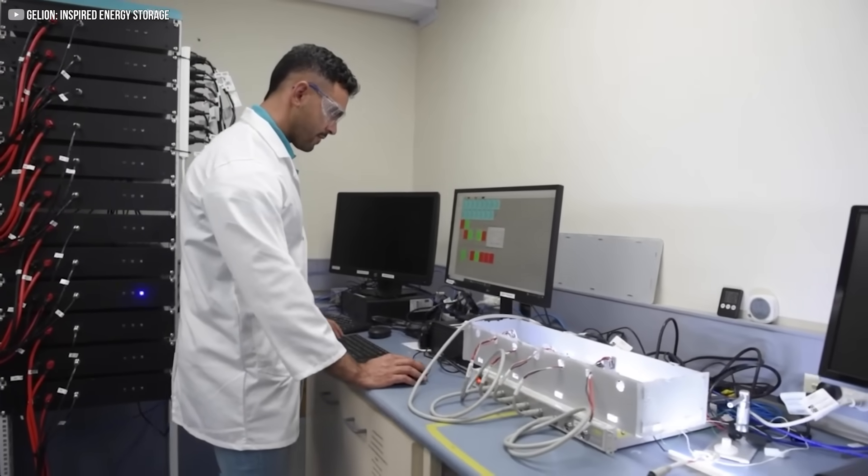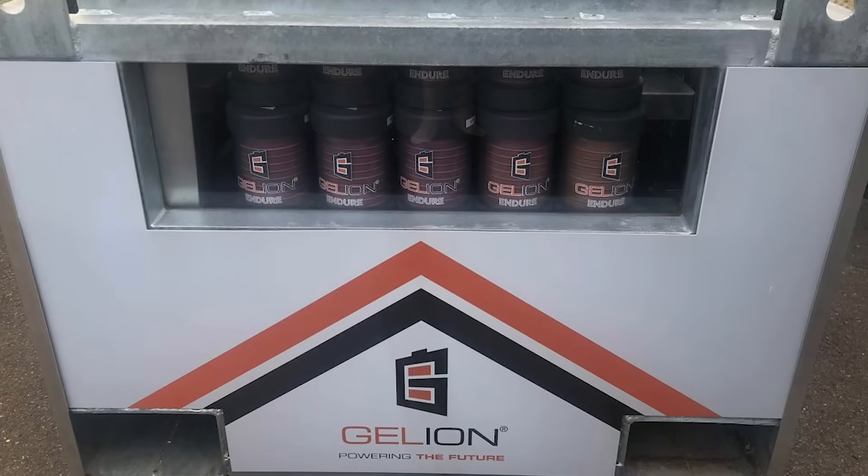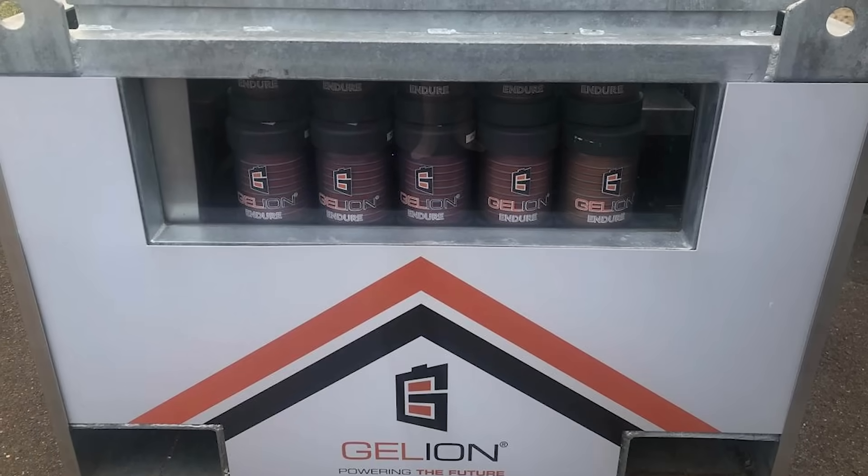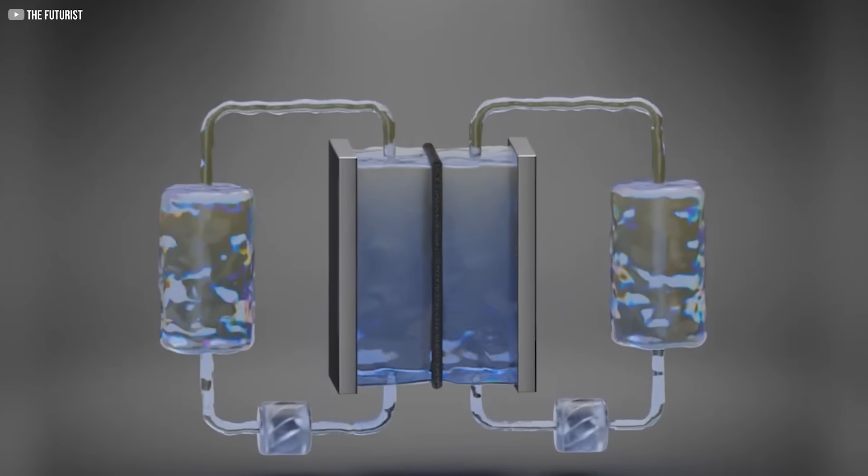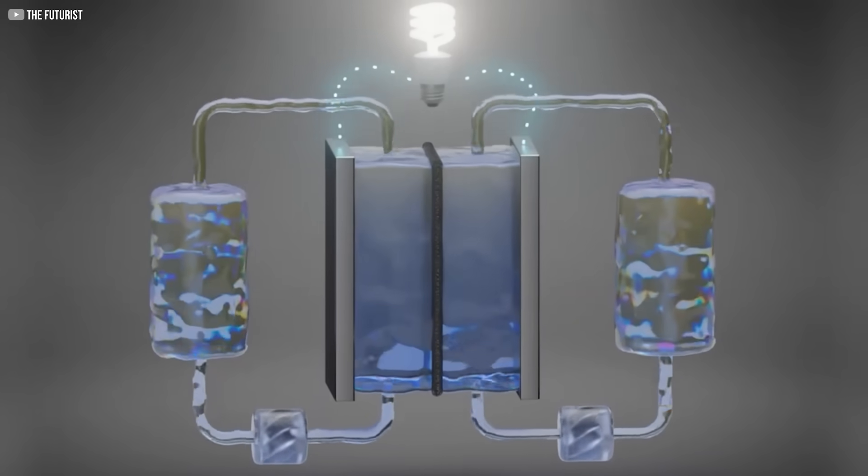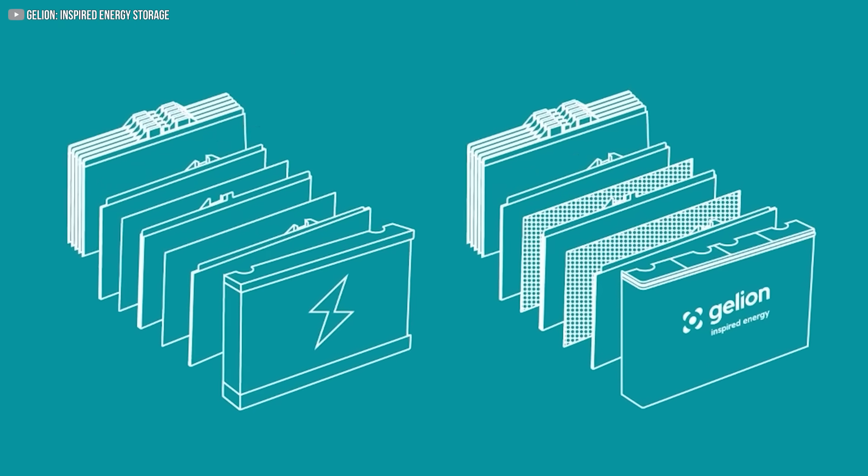This Australian company didn't just refine zinc bromine chemistry. They reimagined it. Their battery, called Endure, ditches the pumps and tanks entirely. Instead of using flowing liquid, Gelion uses a gel, a thick, stable electrolyte sandwiched between zinc and bromide plates.